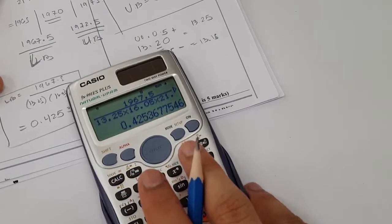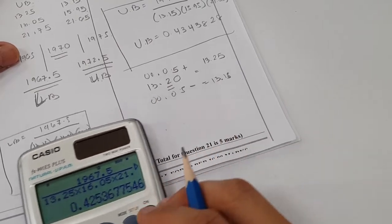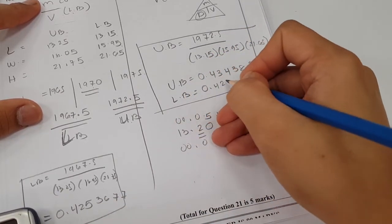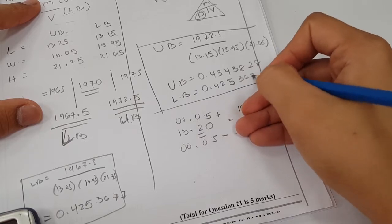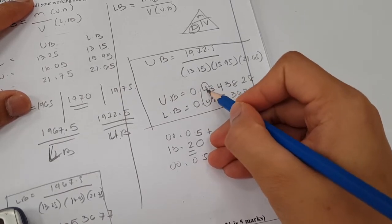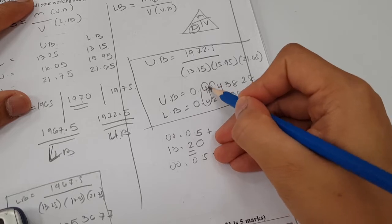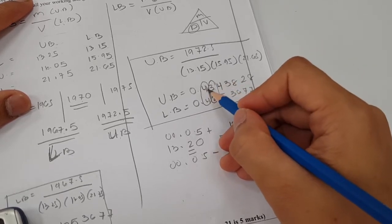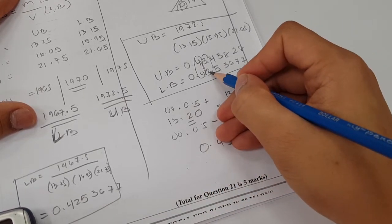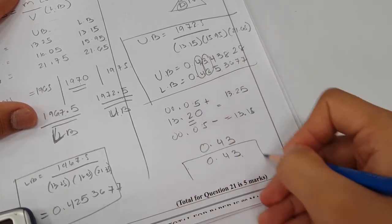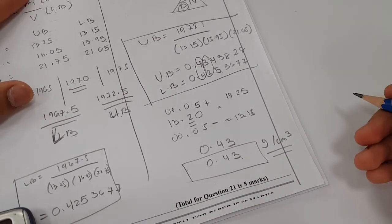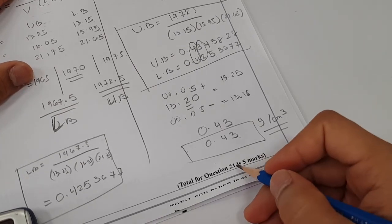Since we need to find the answer in suitable degree of accuracy, write the answers side by side. Lower bound 0.4253677, upper bound 0.4343828. As you can see, the first numbers are the same. The second numbers are not the same, but if I round the upper bound, that will be 0.43. If I round here, that would also give 0.43. So this would be our density in grams per centimeter cubed in the most suitable degree of accuracy. That would be our answer.